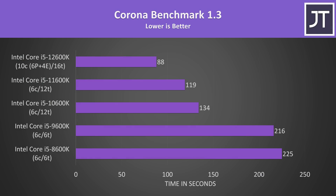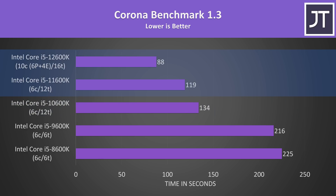The Corona benchmark also uses the processor to render out a scene, with a similar story. 8th and 9th gen are fairly close, and same with 10th and 11th gen — only minor gains — while the latest 12th gen was completing the task 35% faster than 11th gen.